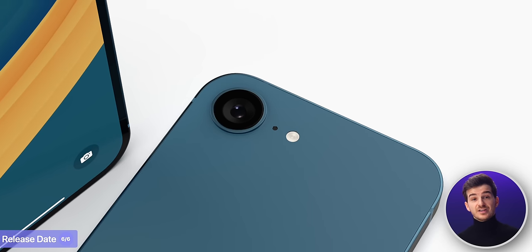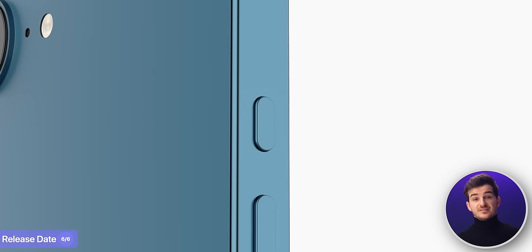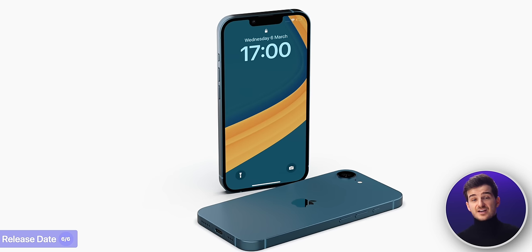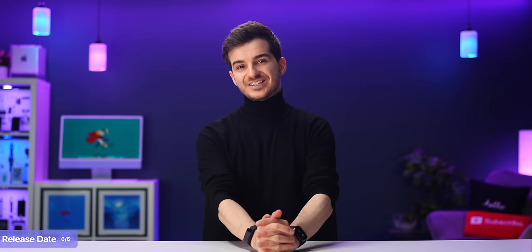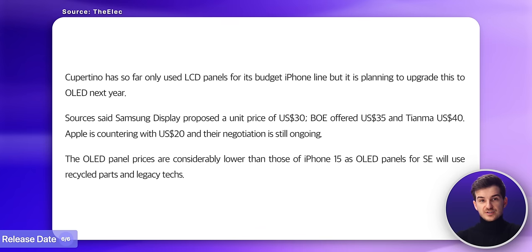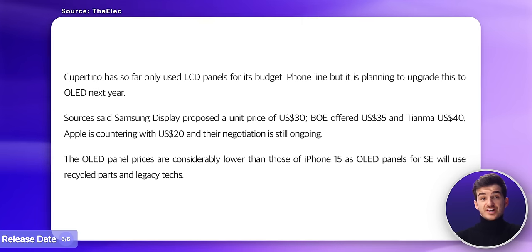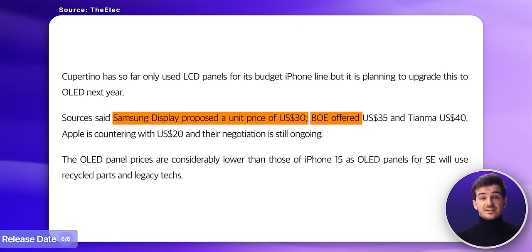After all, there does seem to be a lot of overlap with the more expensive models, such as the camera, the action button, and even the design to some extent. Most rumors do still point towards 2025 though, including a recent report by The Elec, in which they claim that Apple is currently negotiating with Samsung, BOE, and Tianma to manufacture the OLED displays for the iPhone SE 4.